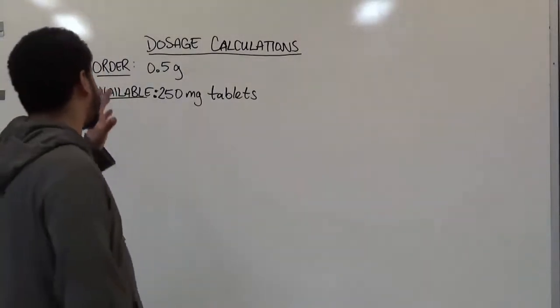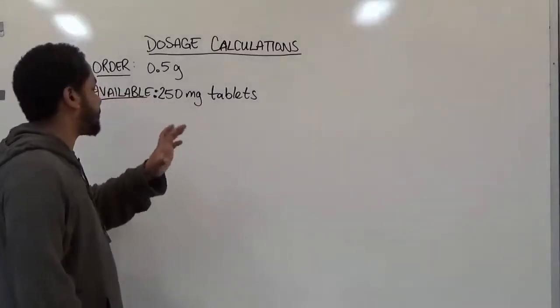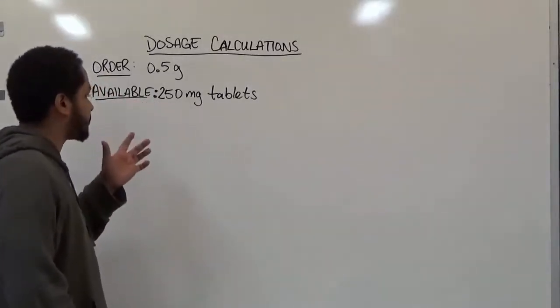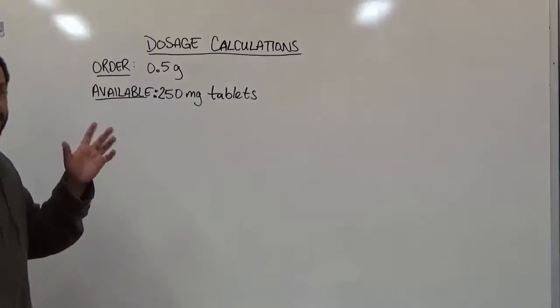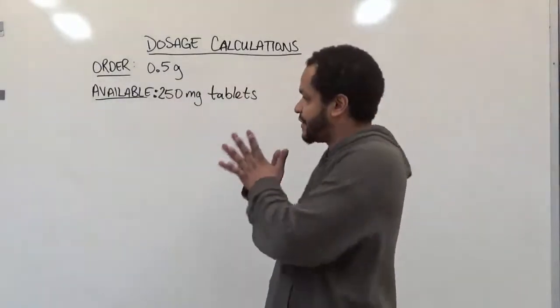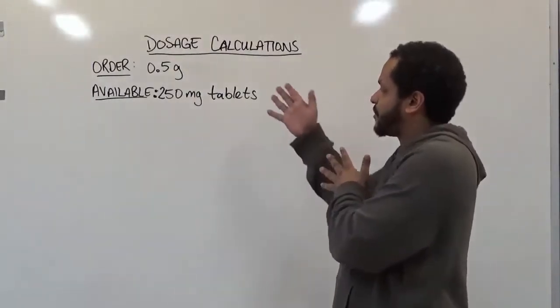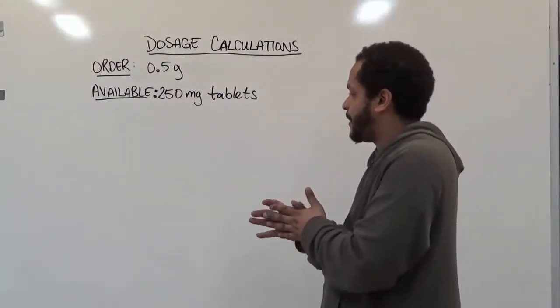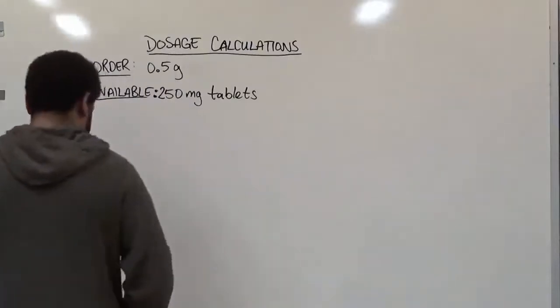Here we have a bit of a problem because the grams and the available milligrams are different units. The first approach we should take is dimensional analysis. The reason we're using dimensional analysis is because when converting our order to a different term, we can break it down using this method.